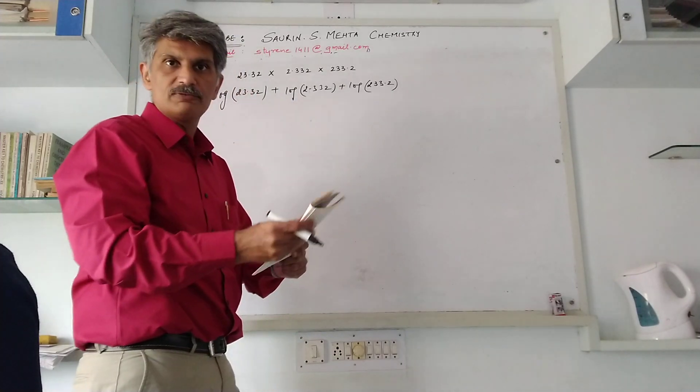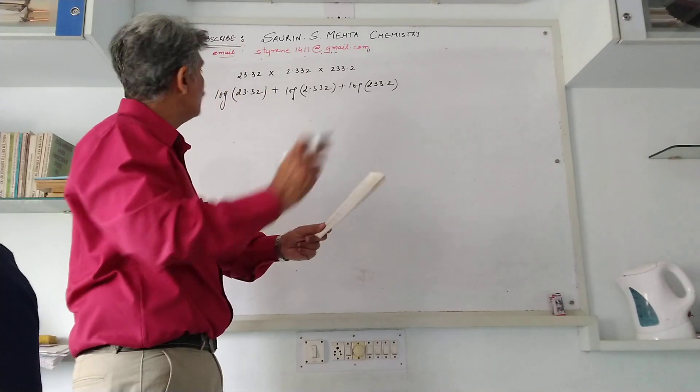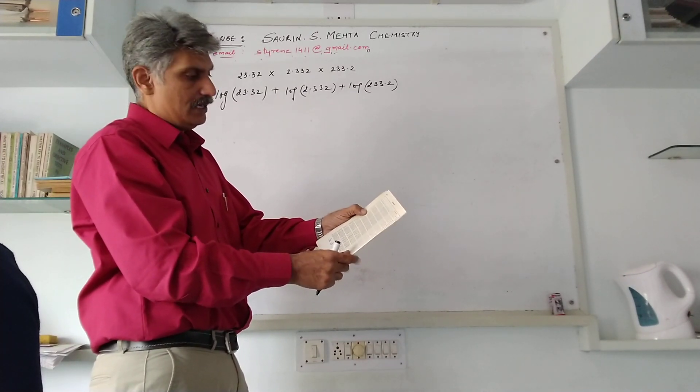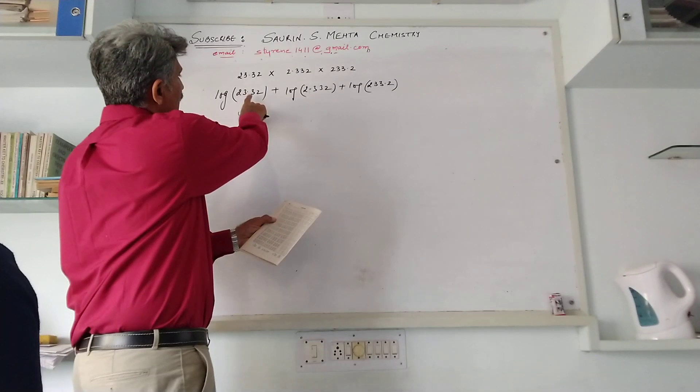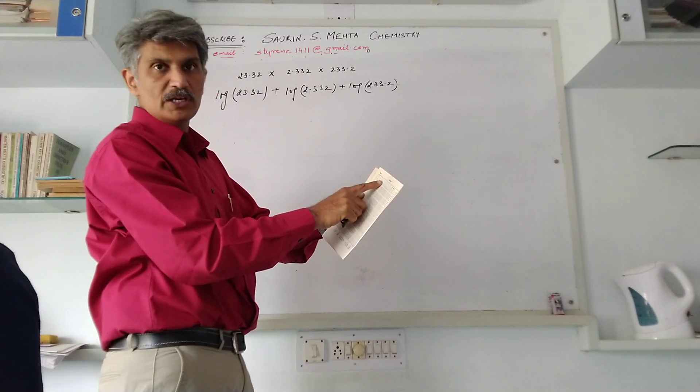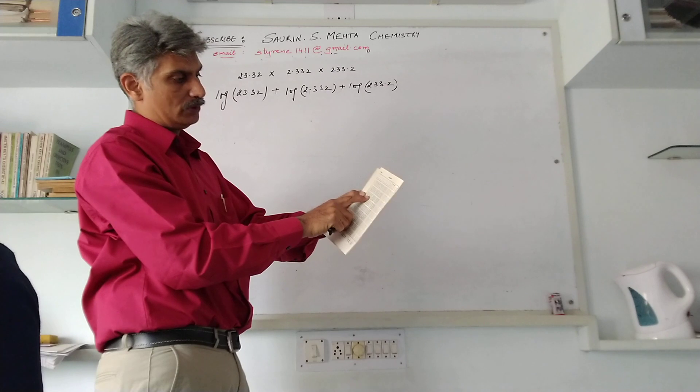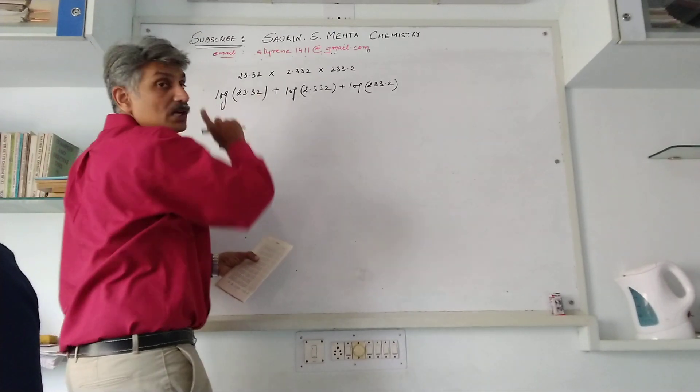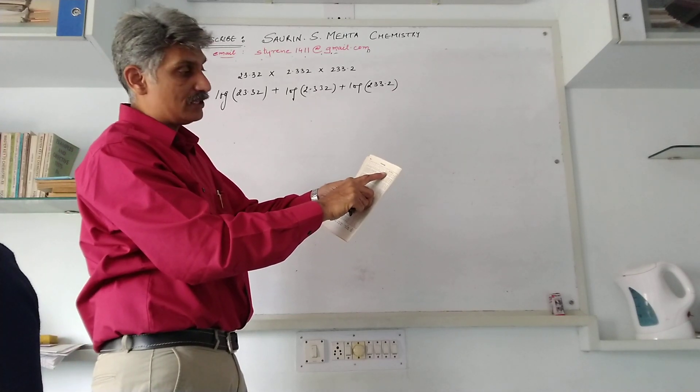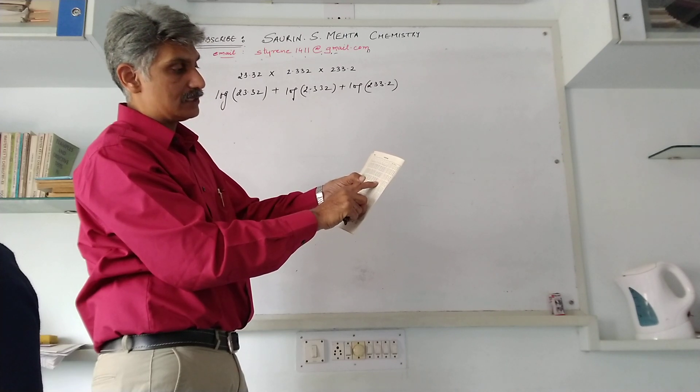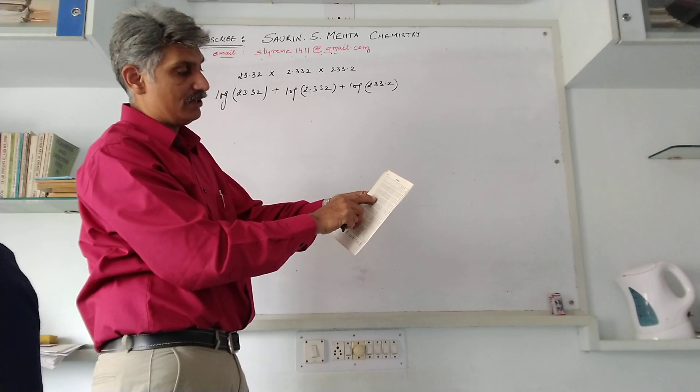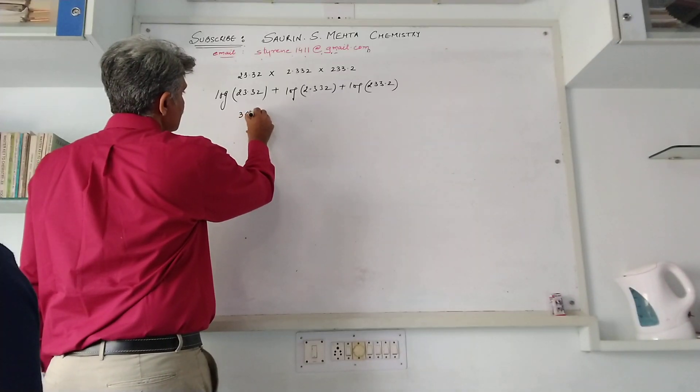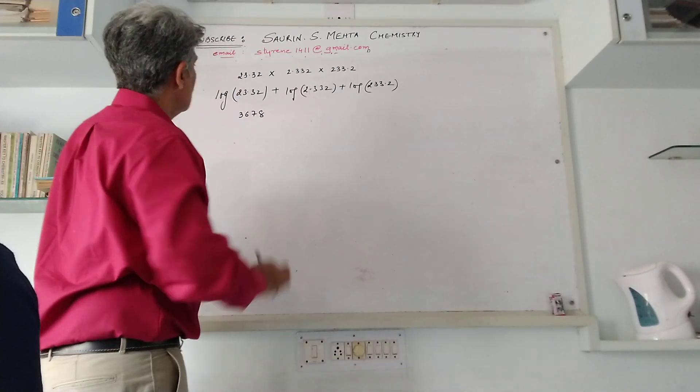For 23.32, in the log table you have 2.3. With that you have the 3 number. If you proceed from 0, 1, 2, 3 on the top, just below 3 on the number 2.3, you will find the value 3674. To that there is 2 in the mean difference column. Just slide down your finger, the value is 4. So that is 3674 plus 4, which equals 3678.